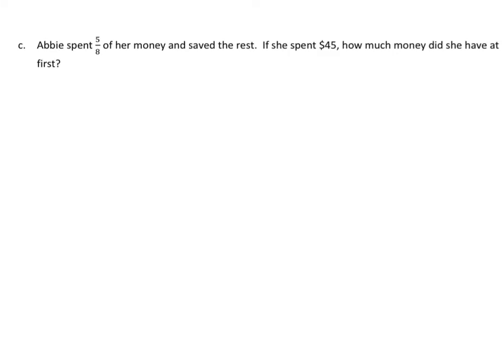Again, let's read. Abby spent 5 eighths of her money and saved the rest. If she spent $45, how much money did she have at first? Let's make our tape diagram. This is kind of like the last couple problems that we saw in the previous presentation or screencast on simply solving and modeling. We don't know the whole. That's how much money she had at first. But we do know that we are going to partition this into eight equal parts because 5 eighths has a denominator of eight.